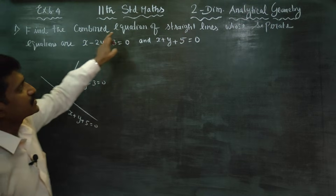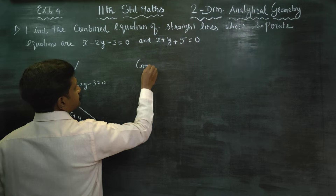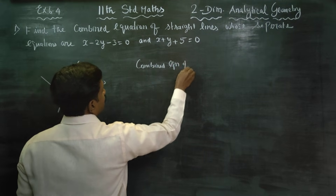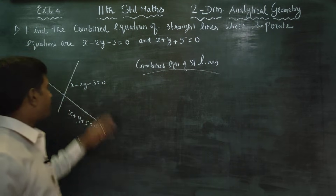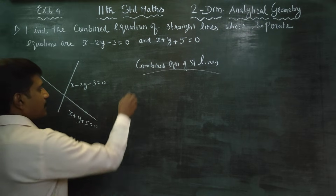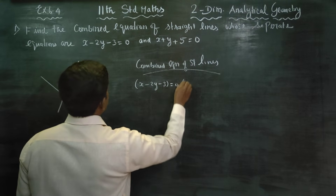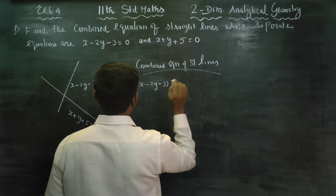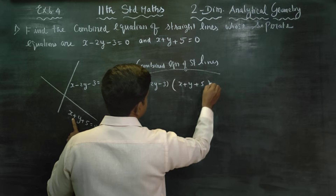This is the combined equations of the straight line. To find the equation of a pair of straight lines, we multiply the first equation into the second equation: x minus 2y minus 3 is equal to 0, multiplied by x plus y plus 5 is equal to 0.